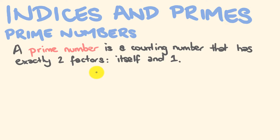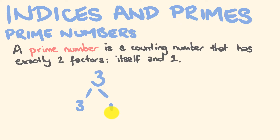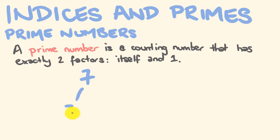Let's have a look at a couple of examples of prime numbers. The number 3 is a prime number. What makes 3 a prime number is that the only numbers that go into 3 are 3 and 1, because 3 times 1 is 3, but no other numbers go into 3. Another example of a prime number is 7, because the only numbers that go into 7 are 7 and 1.